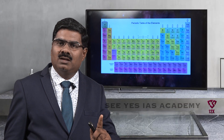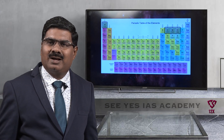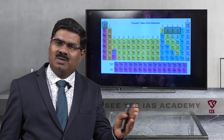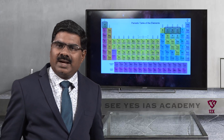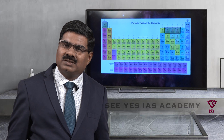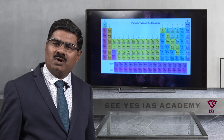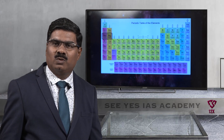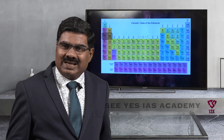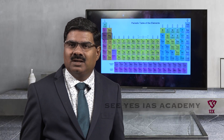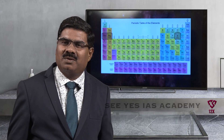Hydrogen atomic number 1, relative atomic mass 1. Carbon atomic number 6, relative atomic mass 12. Nitrogen atomic number 7, relative atomic mass 14. Oxygen atomic number 8, relative atomic mass 16. Sodium atomic number 11, relative atomic mass 23. Magnesium atomic number 12, relative atomic mass 24. Sulfur atomic number 16, relative atomic mass 32.